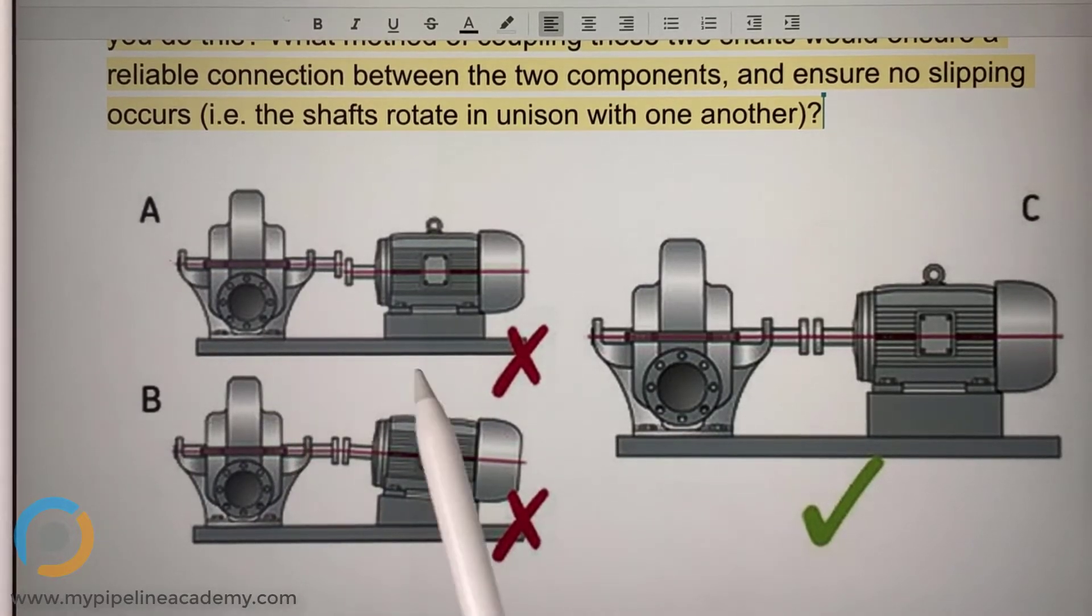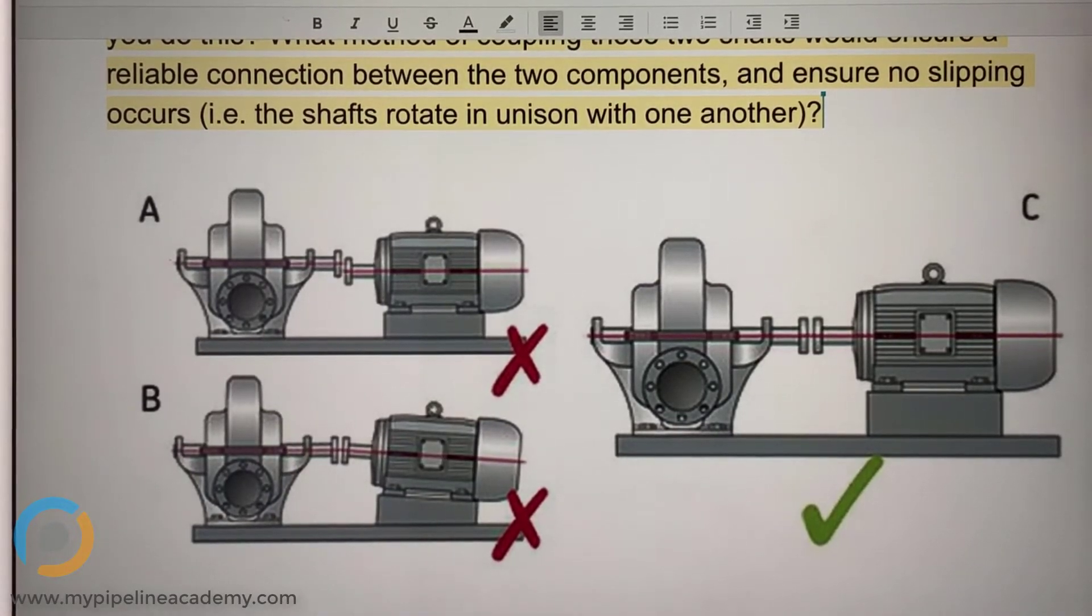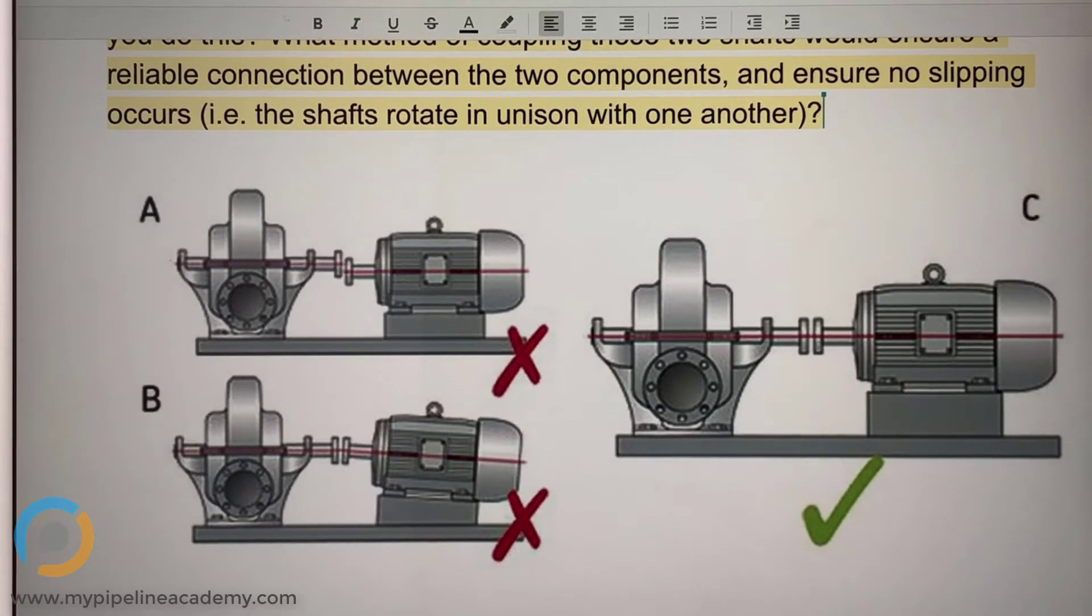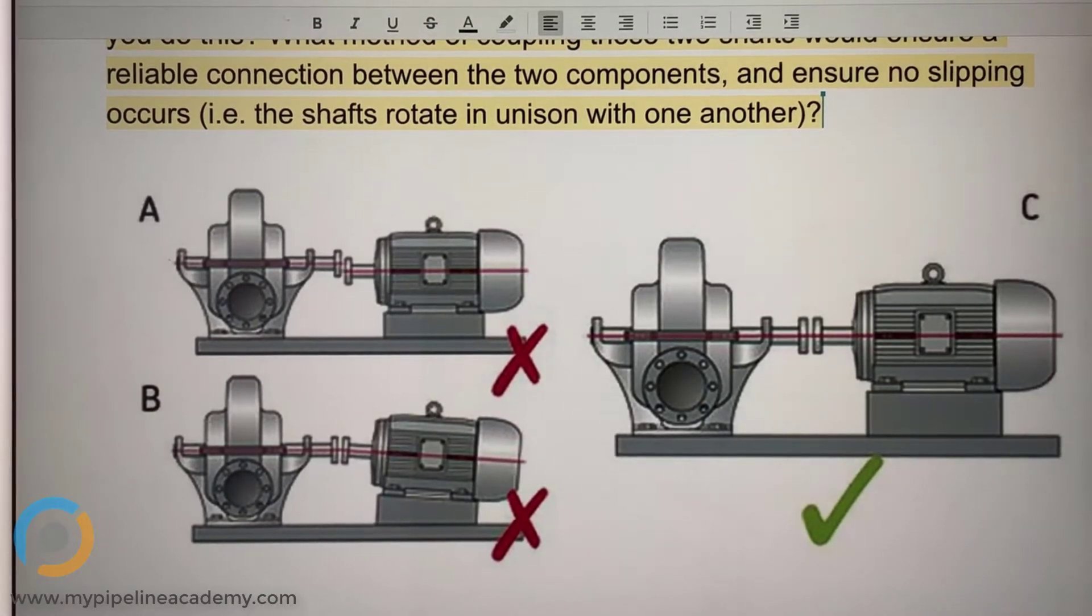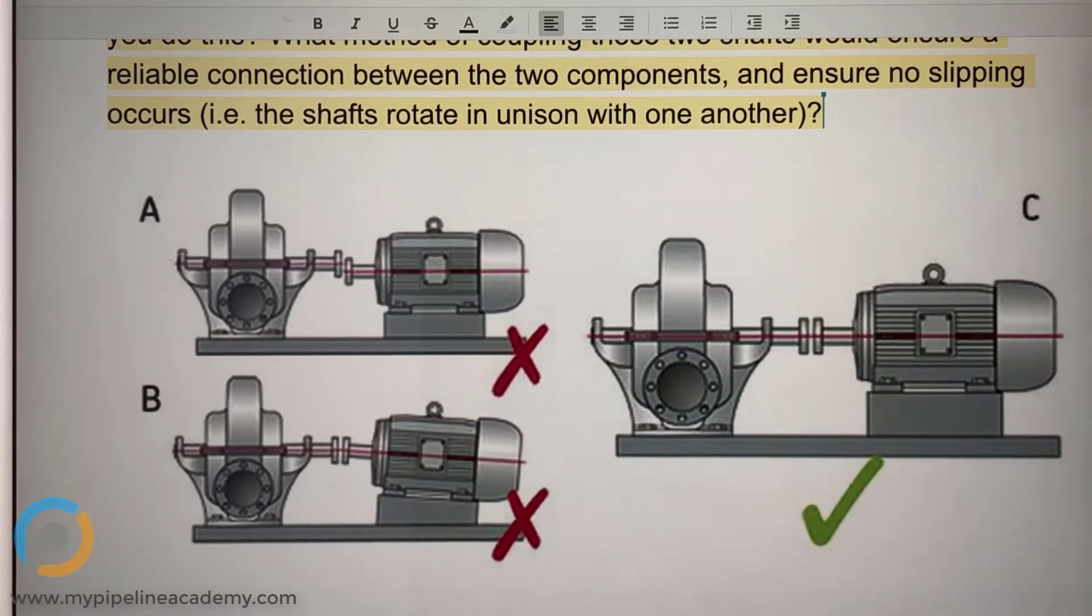So whenever you have two shafts that are already constrained, it's almost impossible. Especially if you're doing like really high volume applications. Low volume, yeah, you can put some shims in there and probably get it close enough. But if you're doing thousands of these things, you don't want to be messing with a bunch of shims to position your shafts. Okay. Anything else?